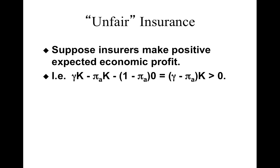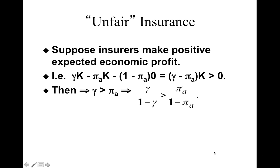Now think about the case where insurance is unfair — the consumer is not offered insurance at the fair price. If the insurance is unfair, it basically means that in the long run insurers may expect to make positive economic profit, so the state-contingent profit is greater than zero. This implies that γ is greater than the accident probability.